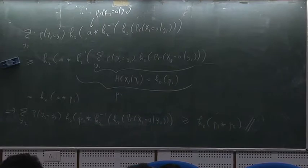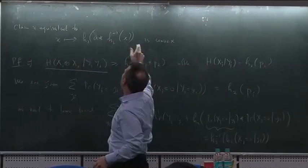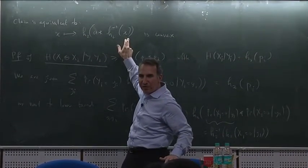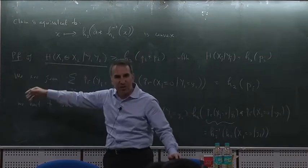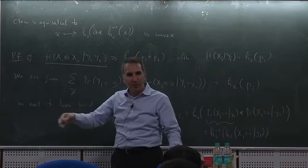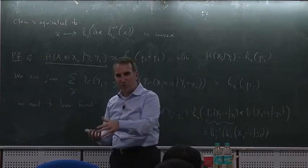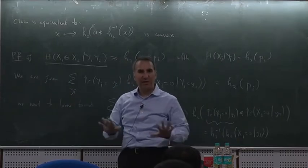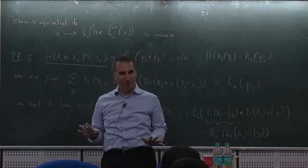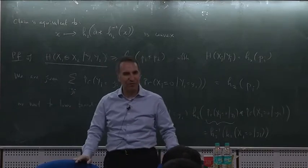So we proved this strange claim — by taking a bunch of derivatives and checking convexity and concavity — and from this we proved Mrs. Gerber's Lemma, which guarantees that we have this curve that lower bounds I_W plus minus I_W minus in terms of I_W. So we get our kappa. My promises from the morning are now fulfilled.